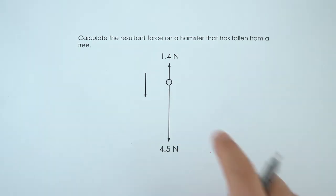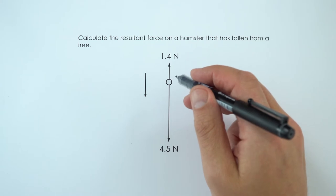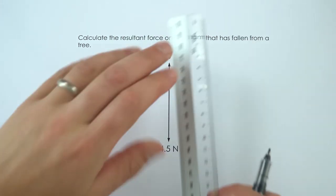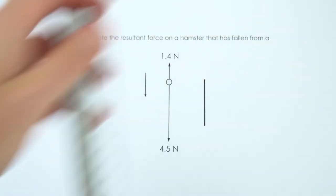So for this one it's simply the fact that there's a force of 4.5 Newtons down and 1.4 Newtons up. We can draw this as an equivalent arrow which is going to be a little bit shorter than that 4.5 down.